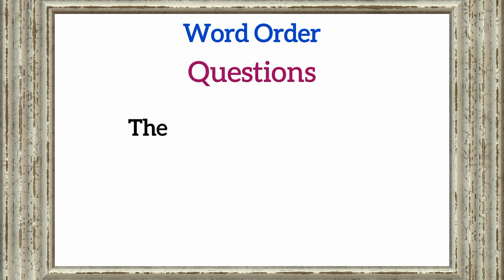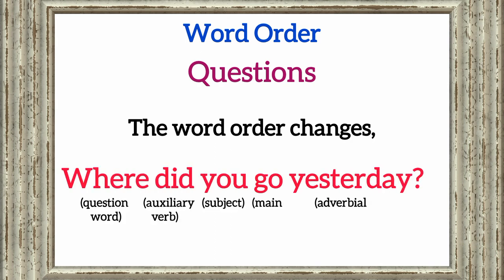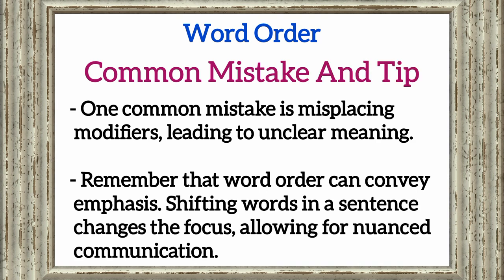In questions, the word order changes. For example, 'where did you go yesterday?' Here, 'where' is the question word, 'did' is an auxiliary verb, 'you' is the subject, 'go' is the main verb, and 'yesterday' is the adverbial phrase. One common mistake is misplacing modifiers, leading to unclear meaning. Practice helps in recognizing the correct placement. Remember that word order can convey emphasis — shifting words in a sentence changes the focus, allowing for nuanced communication.